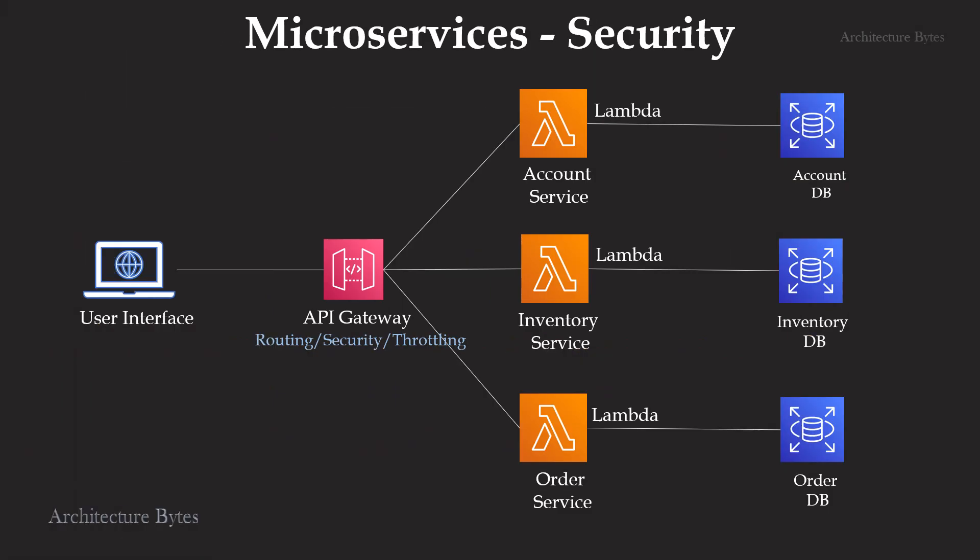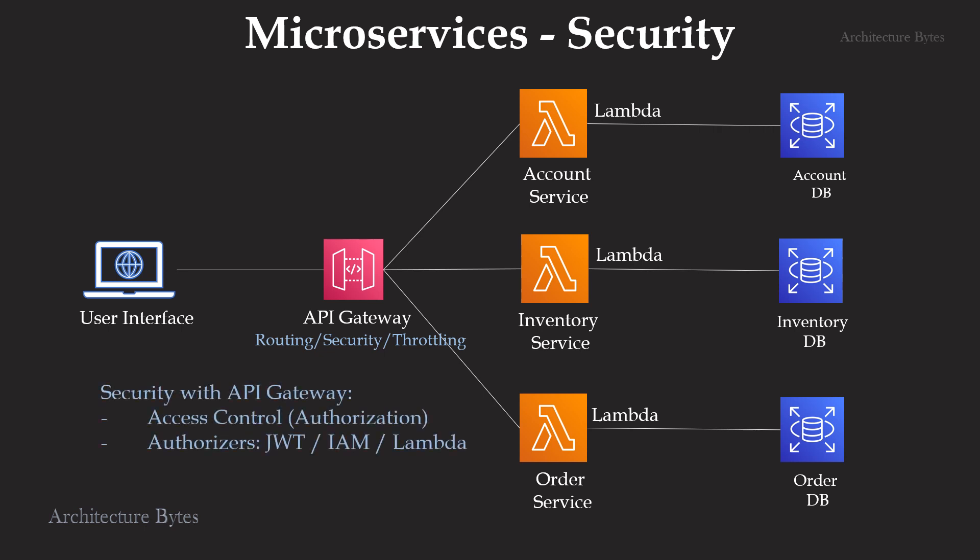With respect to microservices security, API Gateway acts as a gatekeeper. Apart from routing and throttling requests based on configuration, it provides access control. It supports JWT (JSON Web Tokens), IAM, and Lambda as authorizers. These can be configured in the API Gateway console.